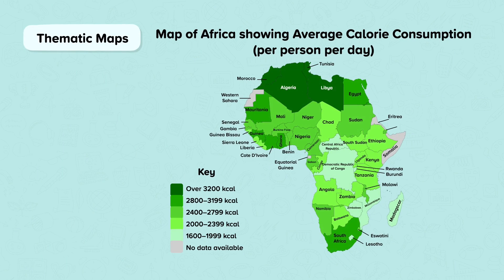Thematic maps show information such as global biomes or levels of wealth, tectonic plates or, as in this case, calorie consumption. Different thematic maps can be used to find links between patterns, such as those between physical and human patterns.